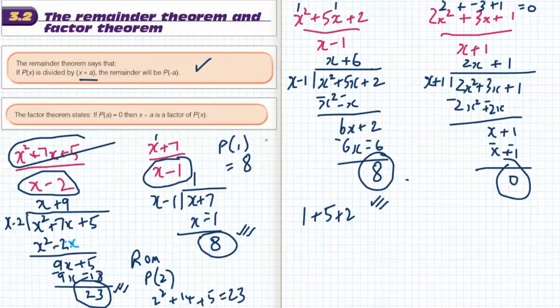Okay, so the remainder theorem says that if I look at my numerator and I work out when does that equal 0, so when x equals 1, if I plug that into the numerator I can quickly find the remainder. That's what the remainder theorem is.